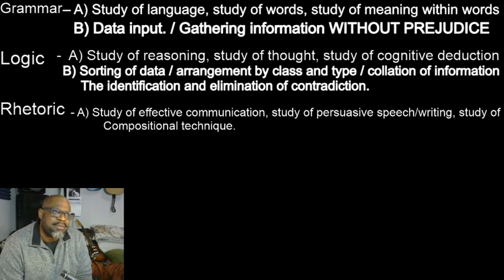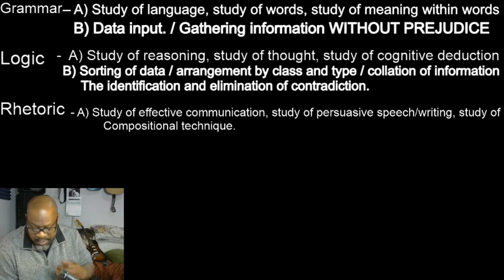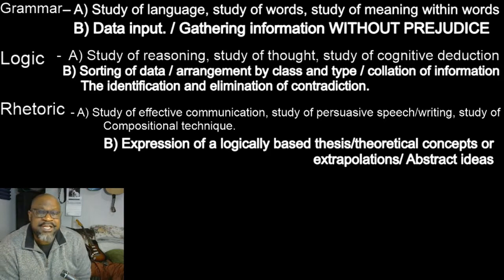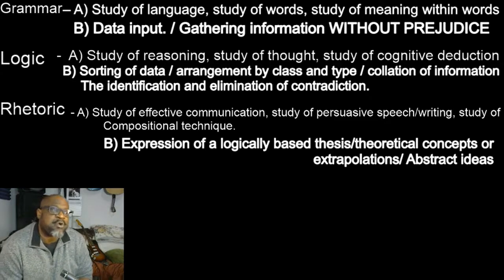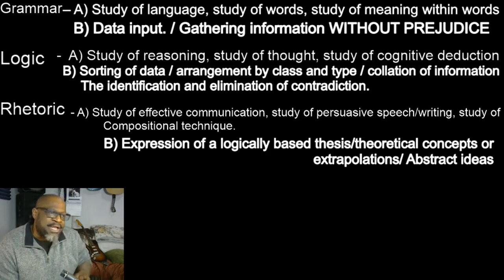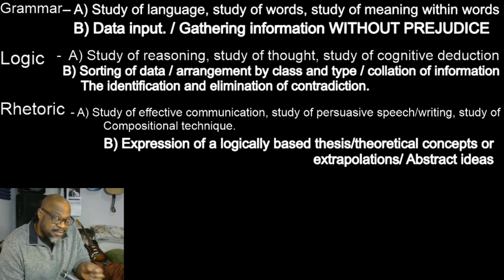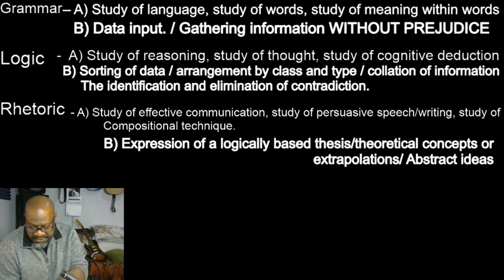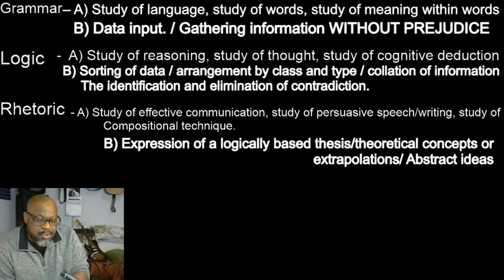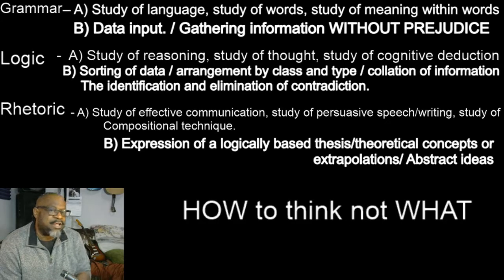Our third subject of the Trivium is rhetoric. Rhetoric is a study of effective communication, a study of persuasive speech or writing, or of compositional technique. This is also our last step in the critical thinking process, and that is simply the expression of a logically based thesis, concept, extrapolation, or abstract idea. It is only once we have collected data without emotional prejudice, analyzed said data with detail to type and class and contradiction, something we often see omitted in apples and oranges comparisons, that we are finally able to express a logical thesis to others or even ourselves. This is the how, and this is also specifically how to think, not necessarily what to think at all.